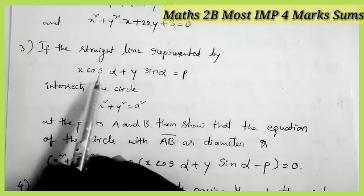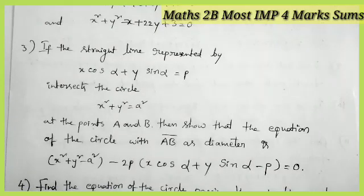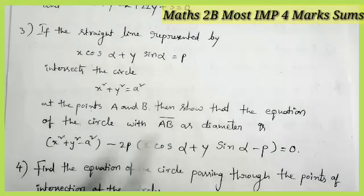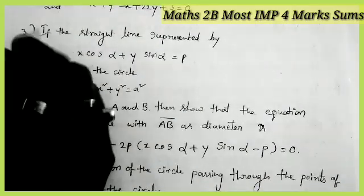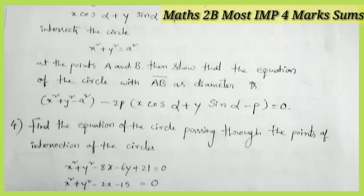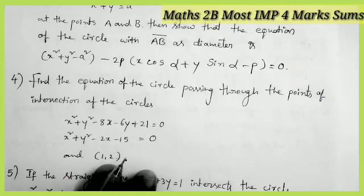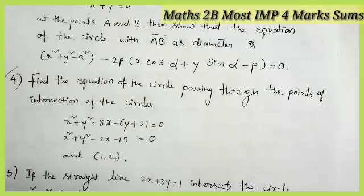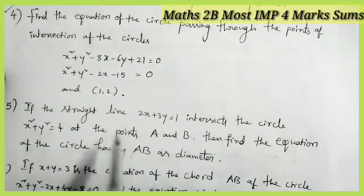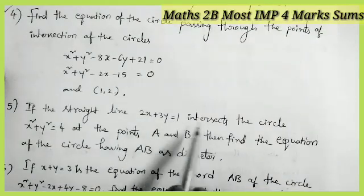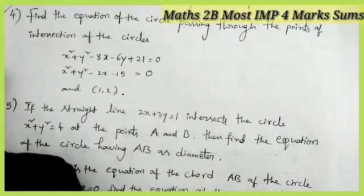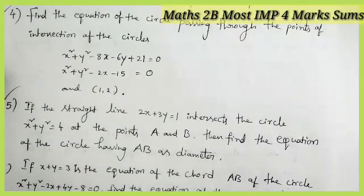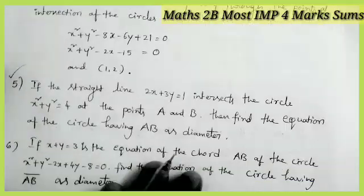If the straight line x cos alpha plus y sin alpha equals p intersects the circle at the points A and B, then show that the equation of the circle with AB as the diameter — most important model. Find the equation of the circle passing through the point of intersection of the circles and the point (1, 2) — most important model. If the straight line 2x plus 3y equals 1 intercepts the circle x squared plus y squared equals 4 at points A and B, then find the equation of the circle with AB as the diameter — most important model.